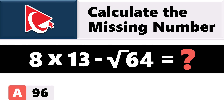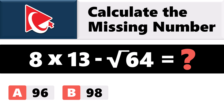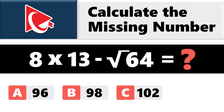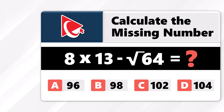Choice A: 96. Choice B: 98. Choice C: 102. And last but not least, choice D: 104. Seems confusing, right?